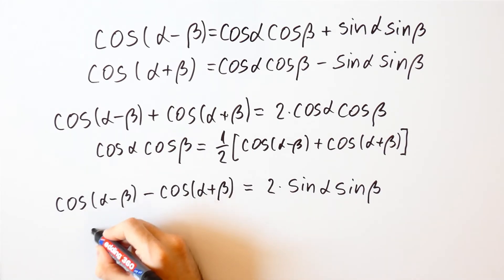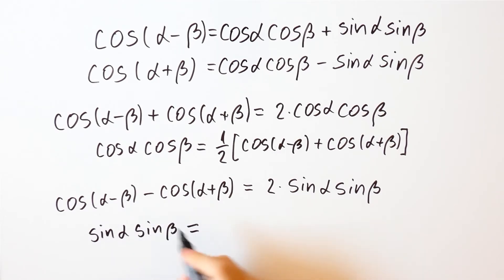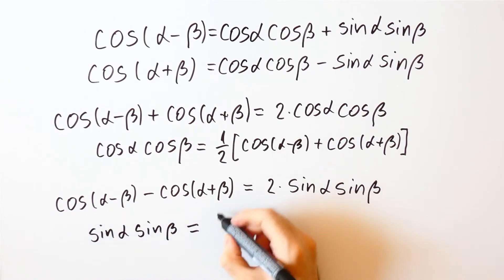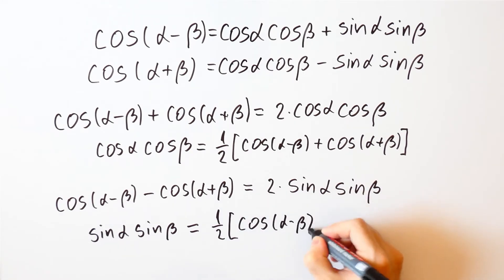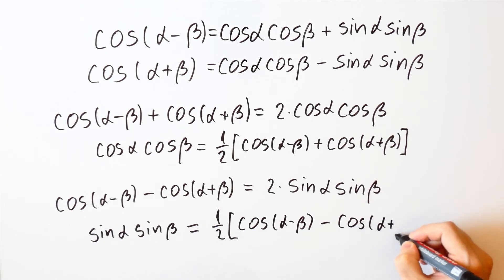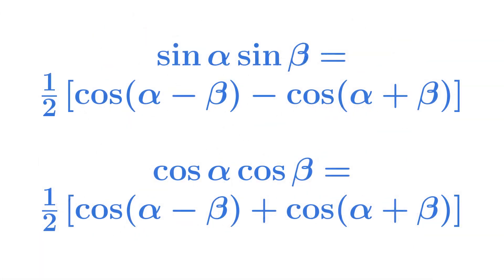That means that the sine of alpha times the sine of beta is equal to one half of the cosine of alpha minus beta minus the cosine of alpha plus beta, and the cosine of alpha times the cosine of beta is equal to one half of the cosine of alpha minus beta plus the cosine of alpha plus beta.